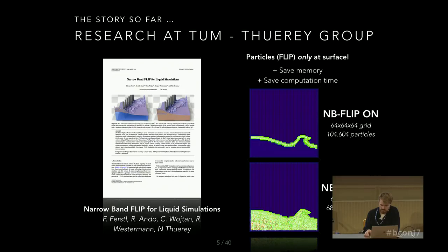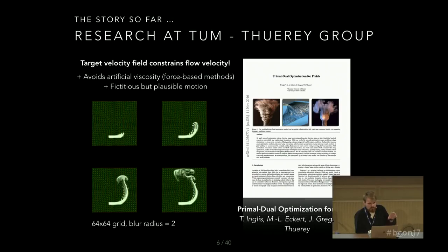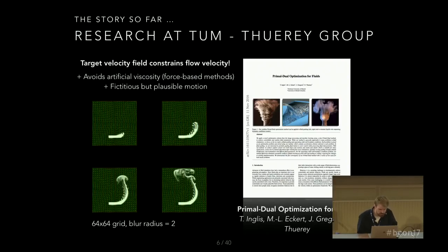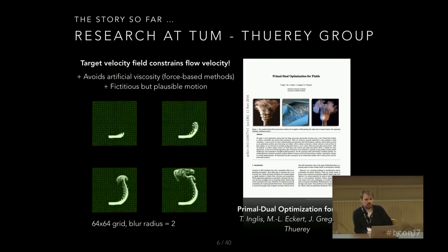The second paper is 'Primal-Dual Optimization for Fluids,' published this year, which deals with fluid guiding. You have a target velocity grid that you enforce onto your simulation — for example a smoke inflow with a spiral velocity field in the background, which is applied onto the actual smoke density field in the pressure solve. What's nice is that every advance in research with MantaFlow can be directly ported over to Blender.